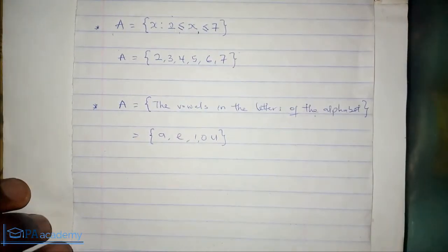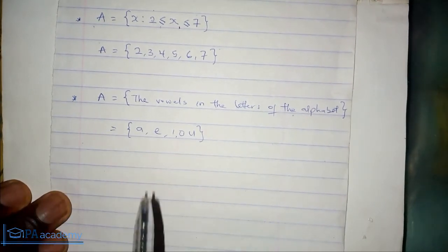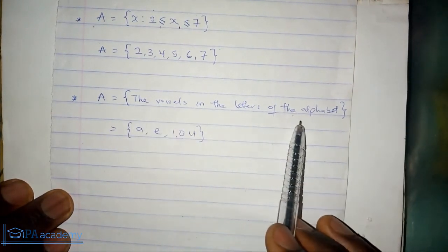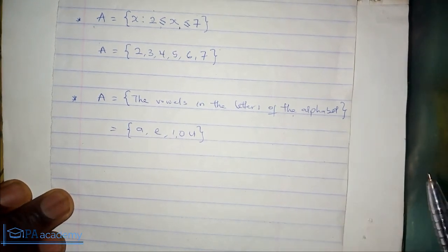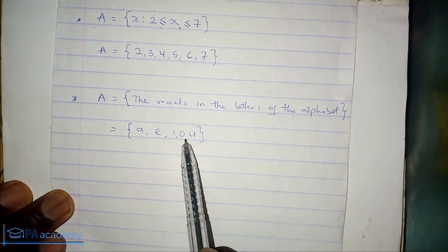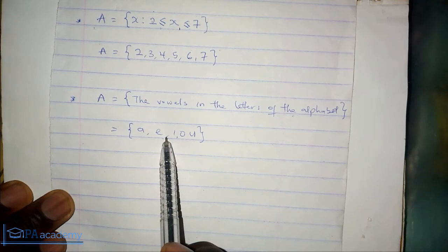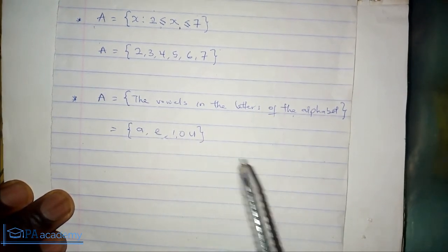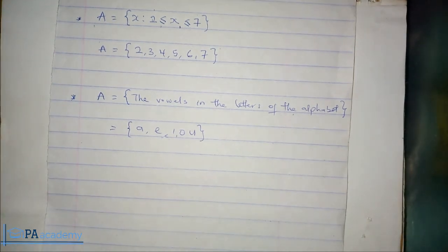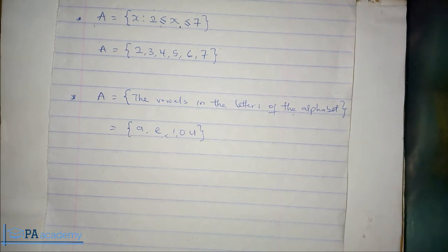Let's look at a third example. Set A equals the vowels in the letters of the alphabet. So the elements are A, E, I, O, U — those are the vowels. Sometimes a question won't categorically list the elements of the set; it just gives you an idea of what they are, and it is left for you to figure them out before solving the question.